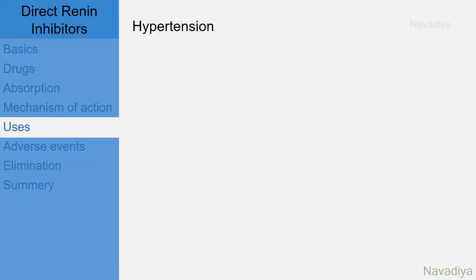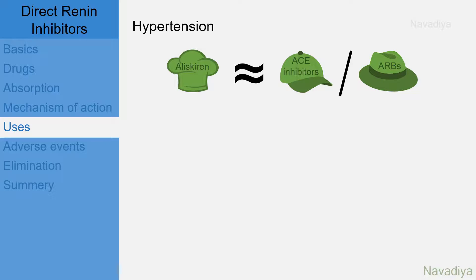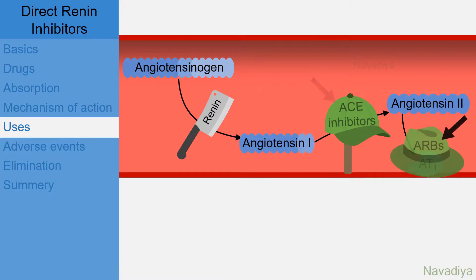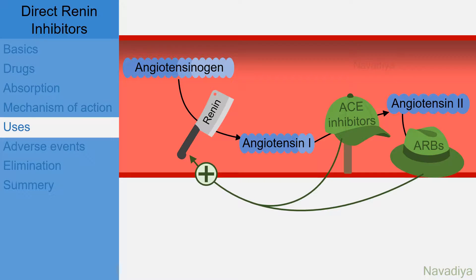Now uses. Aliskiren is approved for use in hypertension. Its efficacy in hypertension is equivalent to that of ACE inhibitors and angiotensin receptor blockers. When Aliskiren is given along with ACE inhibitors or angiotensin receptor blockers, it shows enhanced antihypertensive efficacy. That is because ACE inhibitors and ARBs cause increasing plasma renin activity due to loss of negative feedback. This is counteracted by renin inhibitors, resulting in more complete control of hypertension.